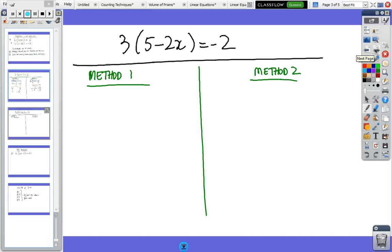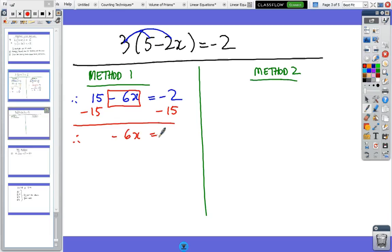Method one is expand the brackets out. We've got 15, 3 times 5 is 15 minus 6x equals minus 2. Then minus 15 from both sides. We leave that to last. So we have minus 6x equals minus 17. Minus 2 minus 15 equals minus 17.